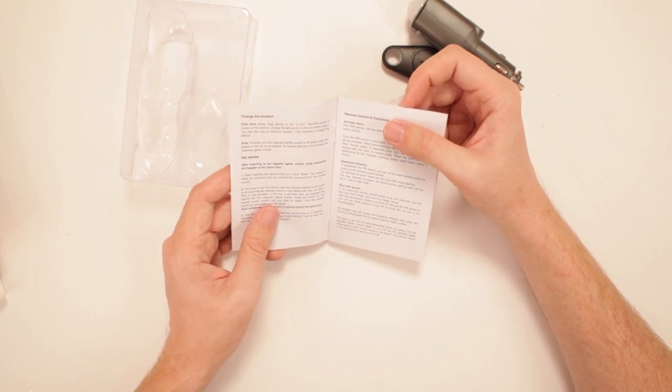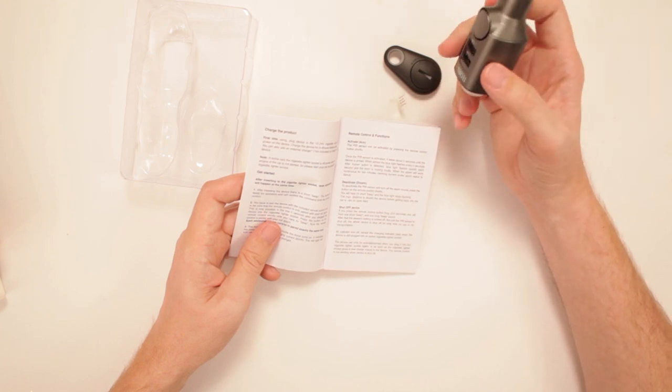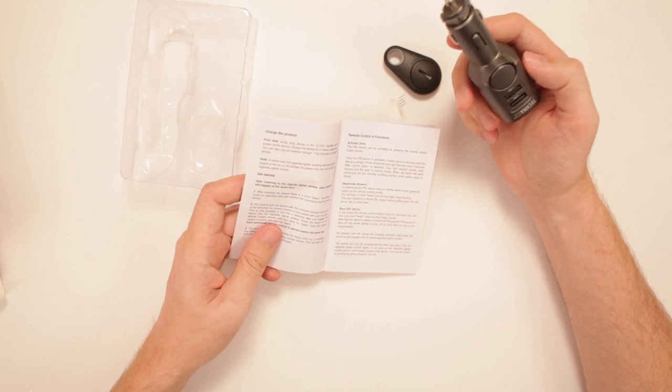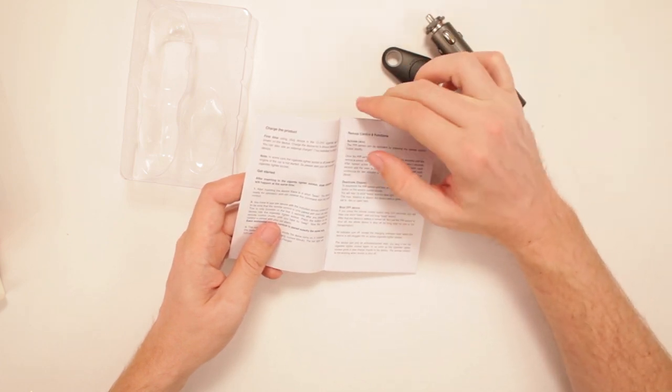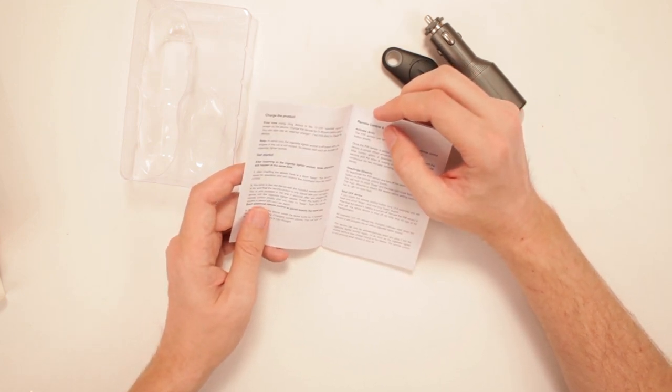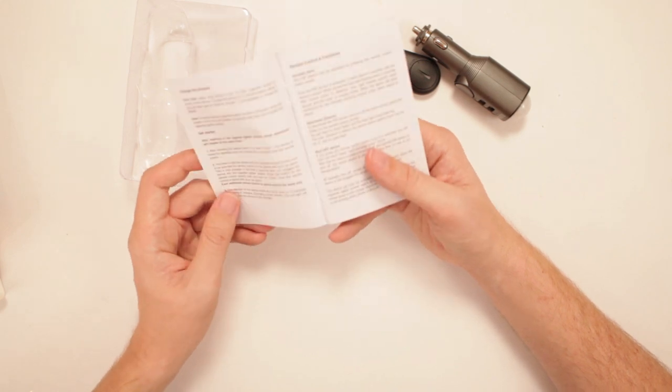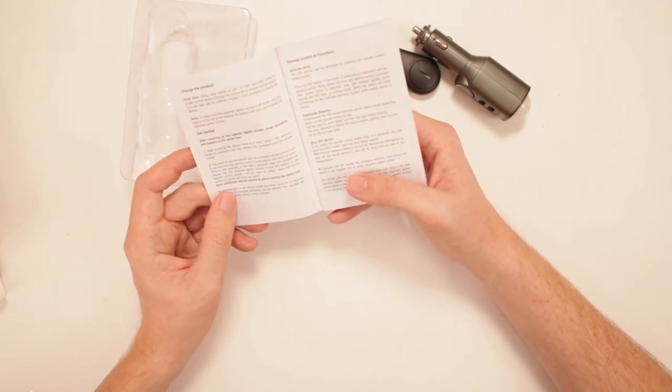So after you insert the cigarette lighter socket, three operations will happen at the same time. There's a short beep, the device is ready for operation and can receive the command from the remote control. You have to pair the device with the included remote control. This is only possible in the first five seconds after you plug in the device in the cigarette lighter socket. That's only possible in the first five seconds. What happens after six? Press the button on the remote control shortly after you hear four times beep. Now the remote control is paired with your car alarm.